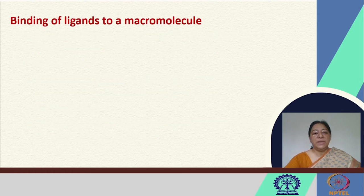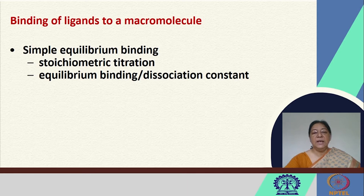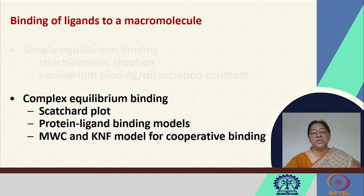If we look at the binding of ligands to macromolecules, there is simple equilibrium binding where we look at stoichiometric titration and other concepts of equilibrium binding and dissociation constants. In addition, there is complex binding where we may have a larger number of binding sites for a particular ligand to the macromolecule.